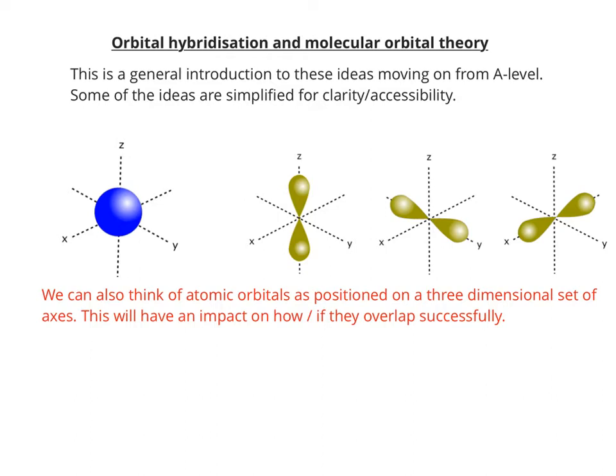We can also consider that atomic orbitals — looking at P and S orbitals here — can overlap, but they need to be considered in terms of the fact that they're in three dimensions. So for example, in P subshells, you get a PZ orbital, a PY orbital, and a PX orbital, according to how it's positioned on a three-dimensional set of axes.